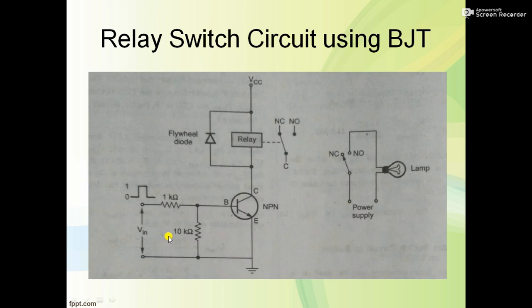First, in the relay part we have two different switches. When this point is connected to NC, it's normally closed, and NO is normally open.